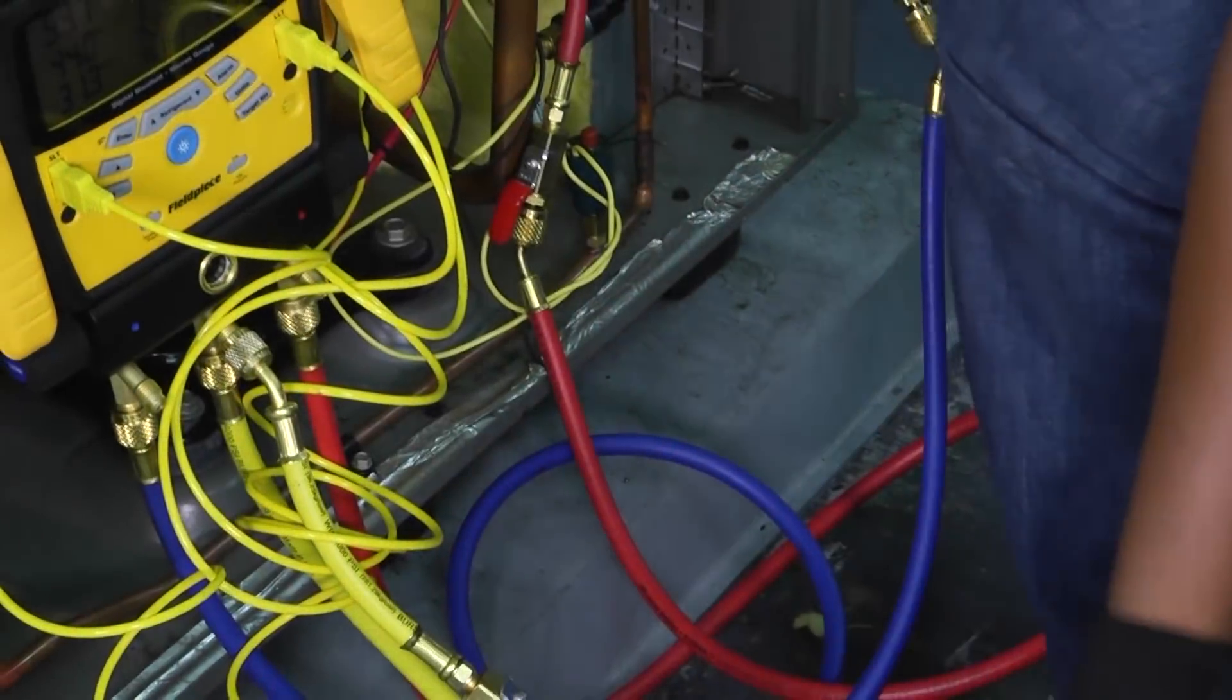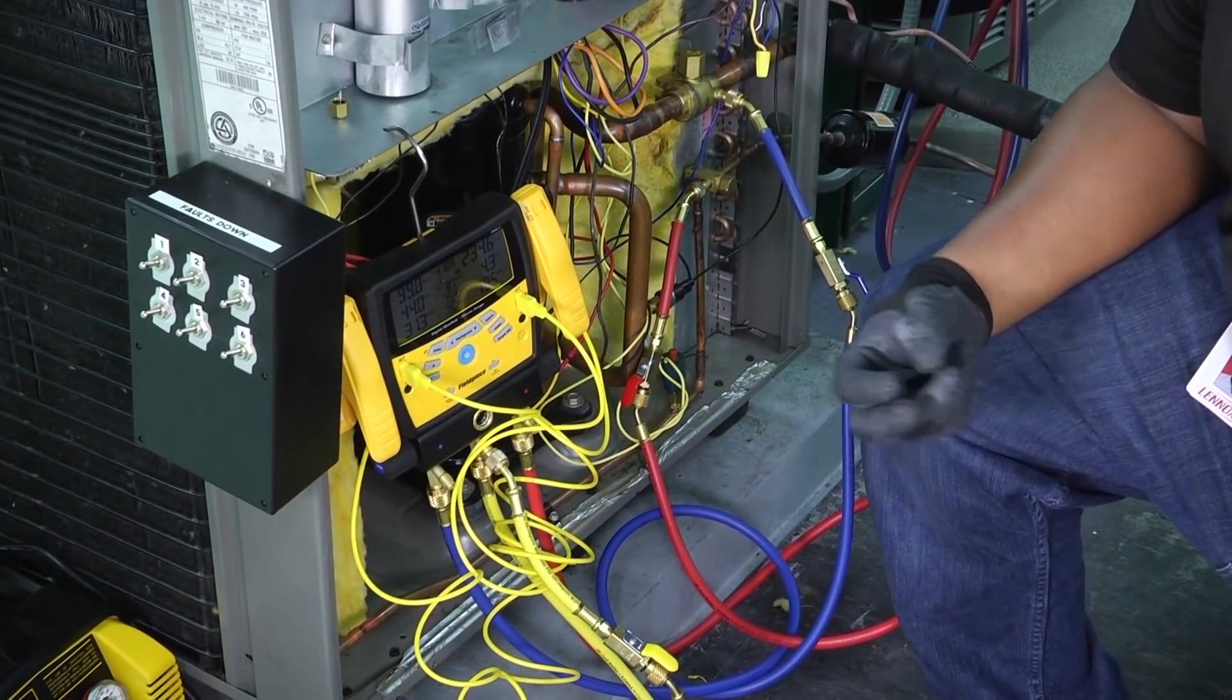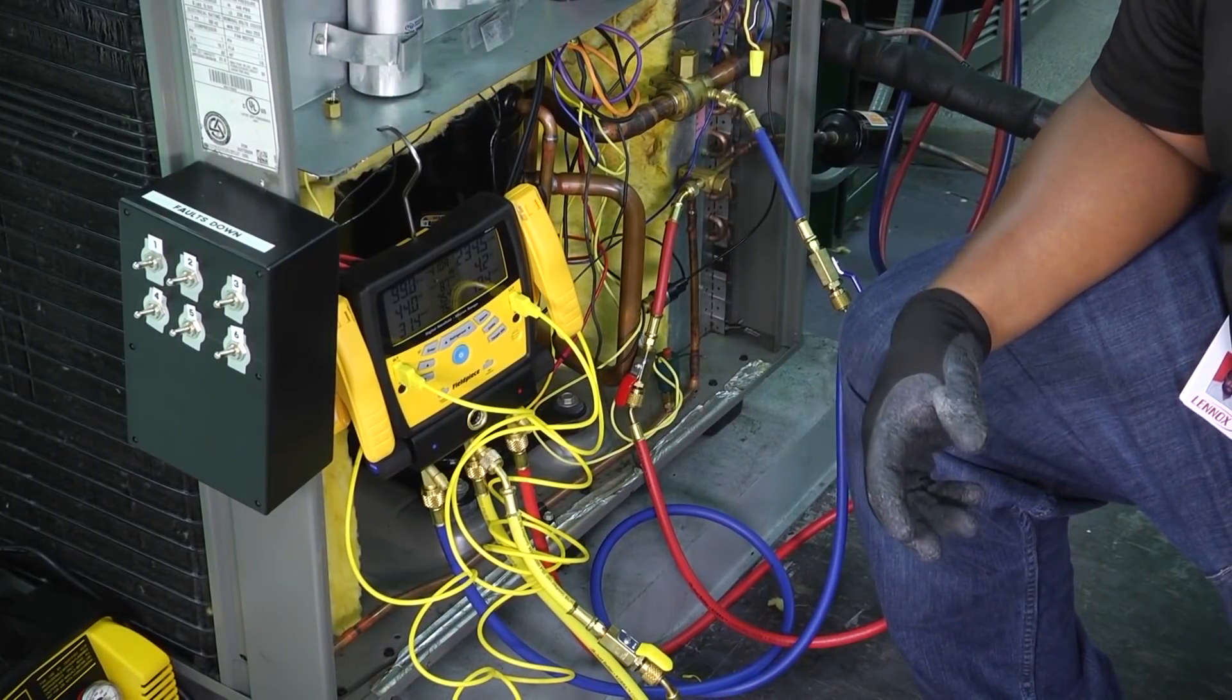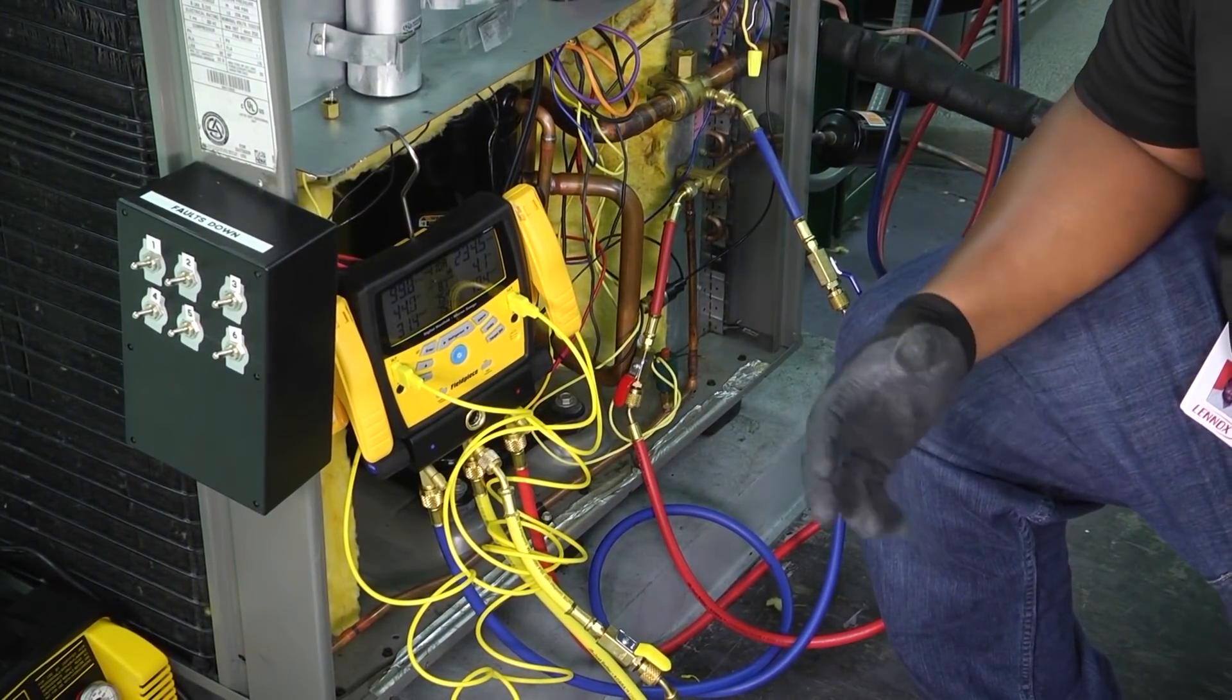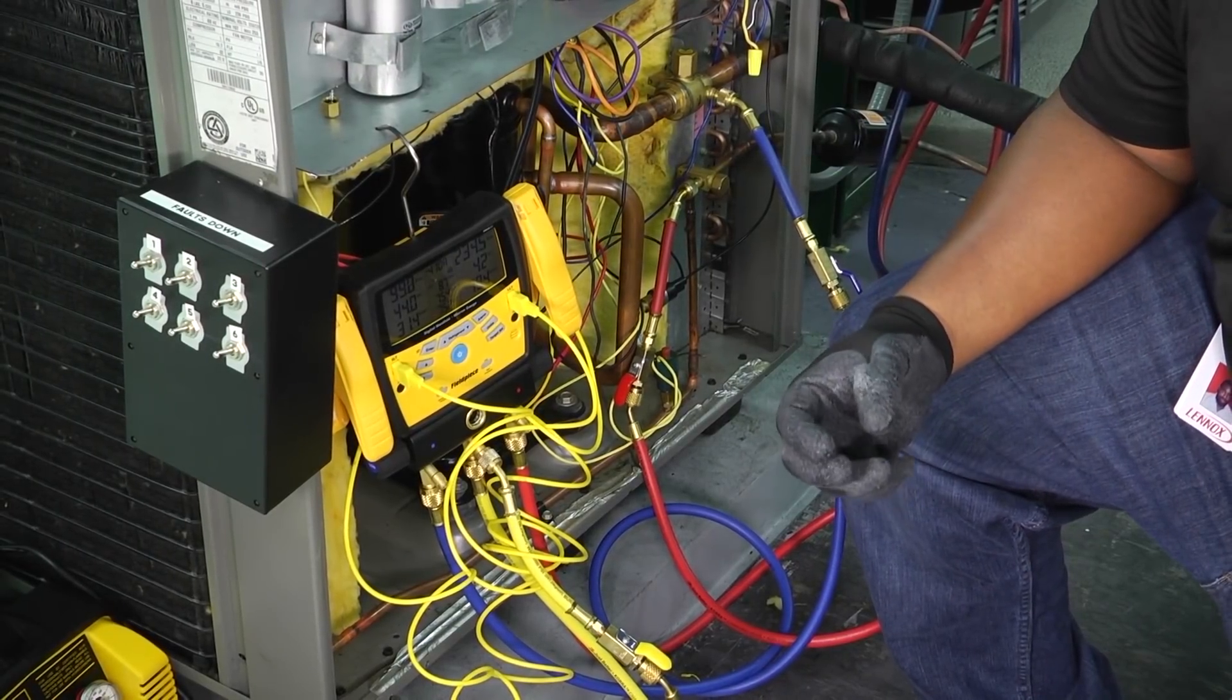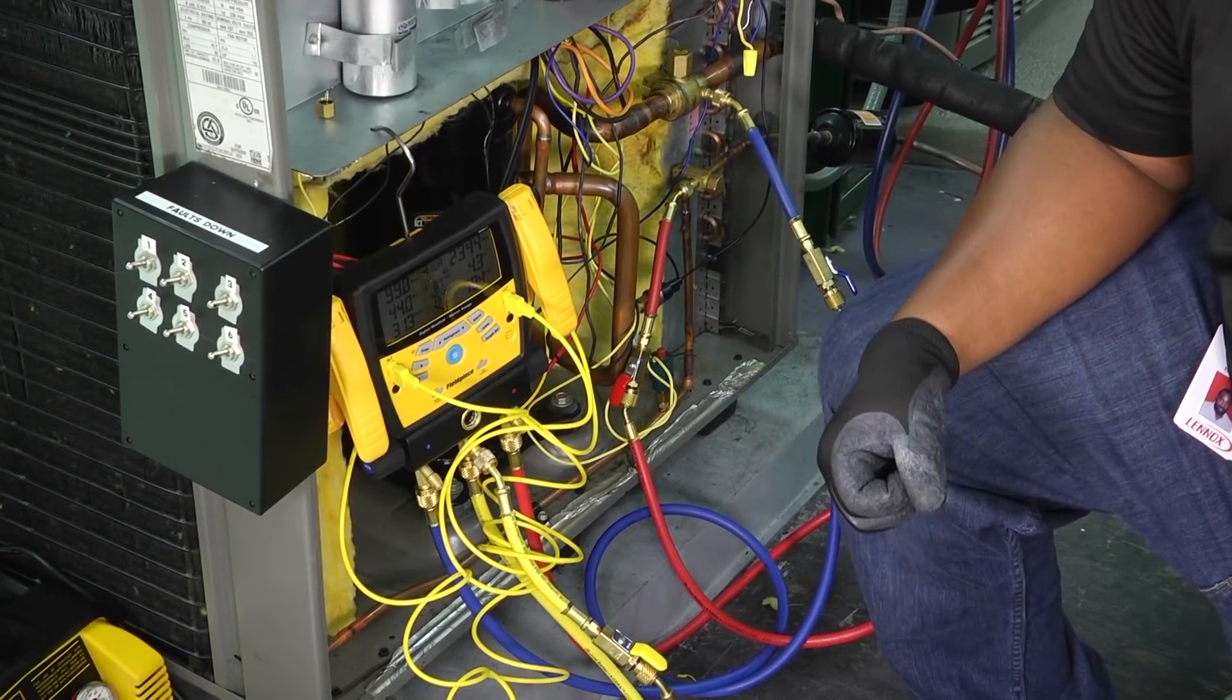Should you have a TXV system, we know that a TXV system is going to maintain a constant superheat of 10 to 15 degrees. So, that number, if that TXV is working properly, should stay within that range. Now, the amount of humidity or moisture content that we have in the air could affect that a little bit, but for the most part, 10 to 15 is going to be the number that we're looking for.